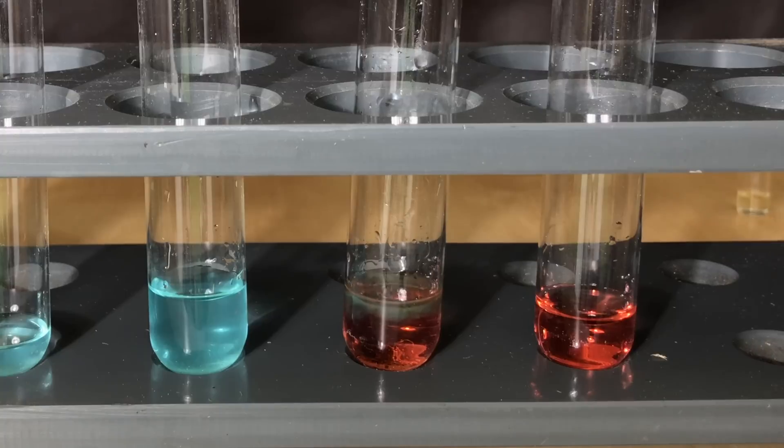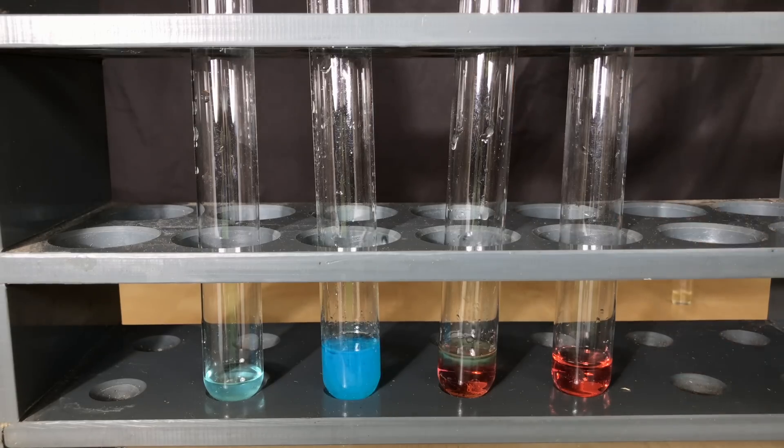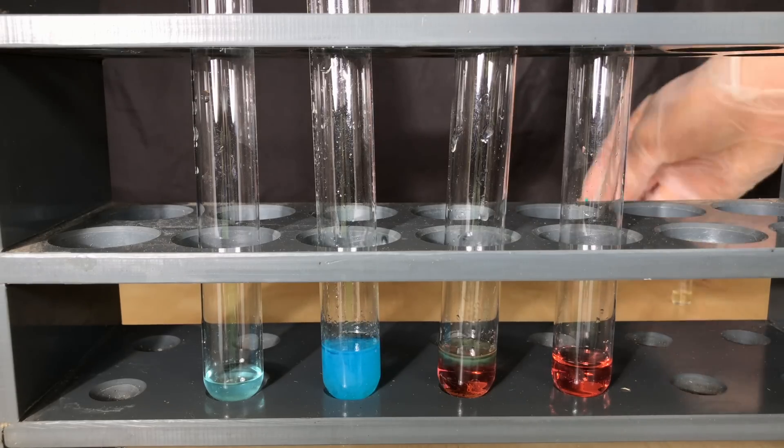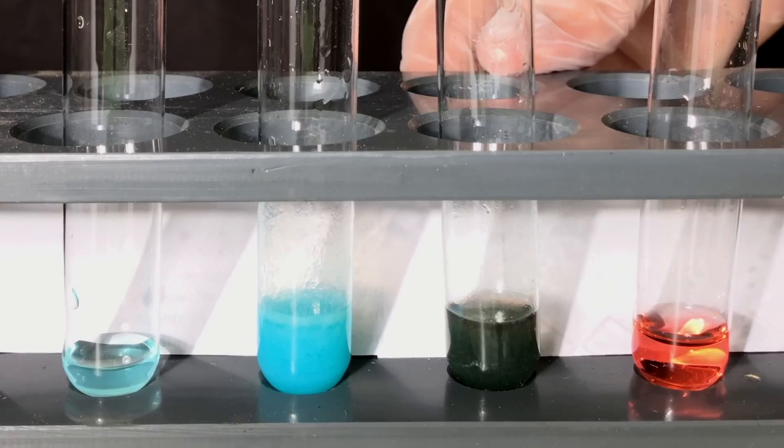With the cobalt, some sort of brown complex was being formed. With the copper on the other hand, we got a light blue complex that seems to be insoluble. I gently shook the test tubes and the color of the complexes became even more visible.